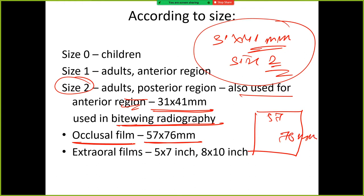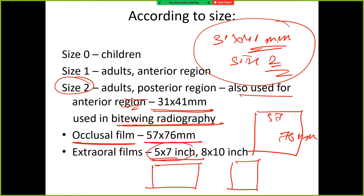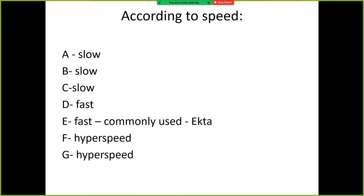Extraoral films — how much are they? 5 by 7 inch, or 8 by 10 inch. Please remember all these sizes: 5 by 7 inch, 8 by 10 inch for extraoral, then 57 by 76 mm for occlusal film.